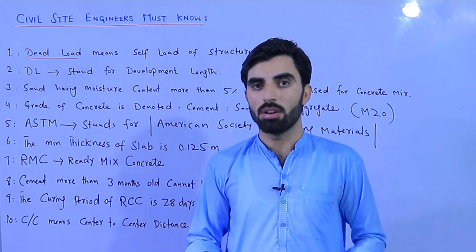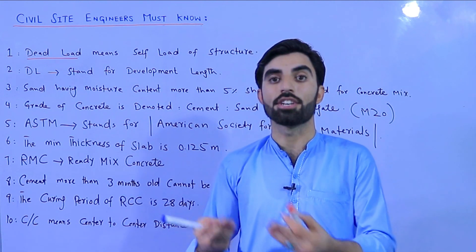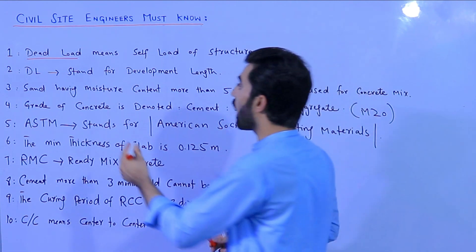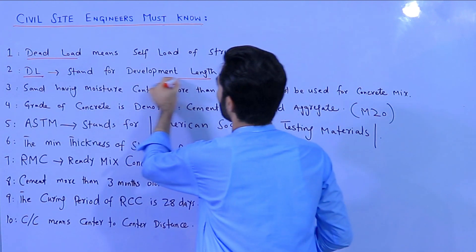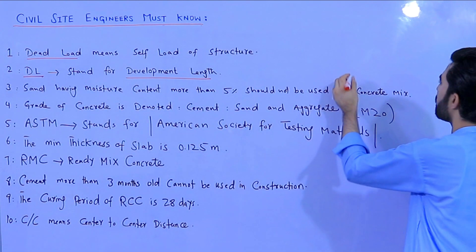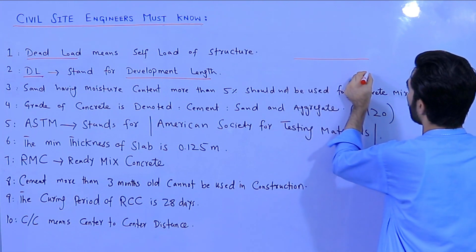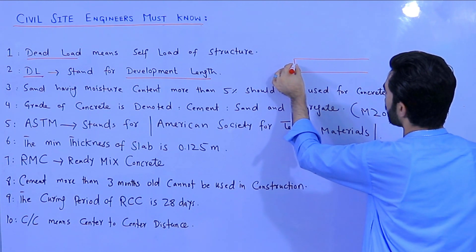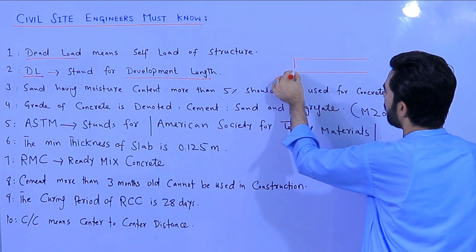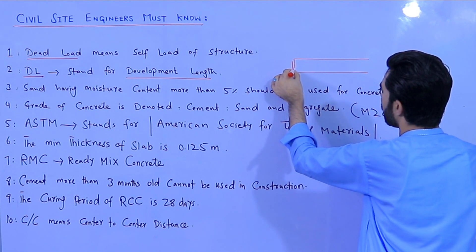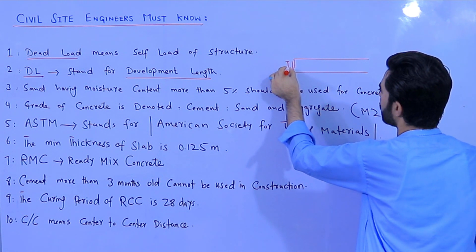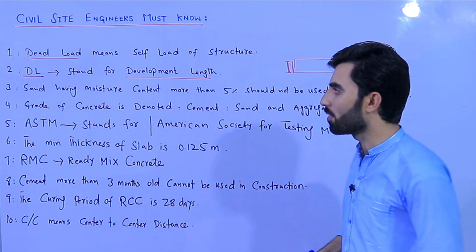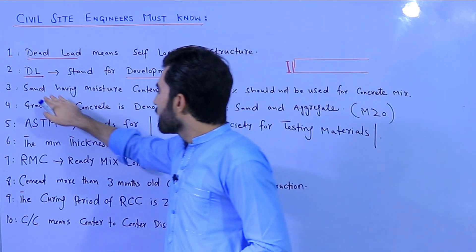The second point: in structural drawings you can see 'DL' — for example, DL = 12 inches, 16 inches, 50D, or 60D. DL stands for development length. Development length is the length over which a longitudinal bar in a beam extends — where one steel bar goes downward and the other goes upward — to transfer stress effectively.